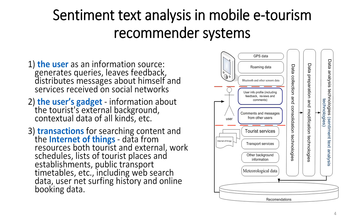There are three main sources of input data for a mobile recommender system. The first is the user as an information source — he generates queries, leaves feedback, and disseminates messages about himself in social networks. All smart tourism technologies nowadays act in a paradigm where a tourist is a sensor itself and a tourist is an expert.